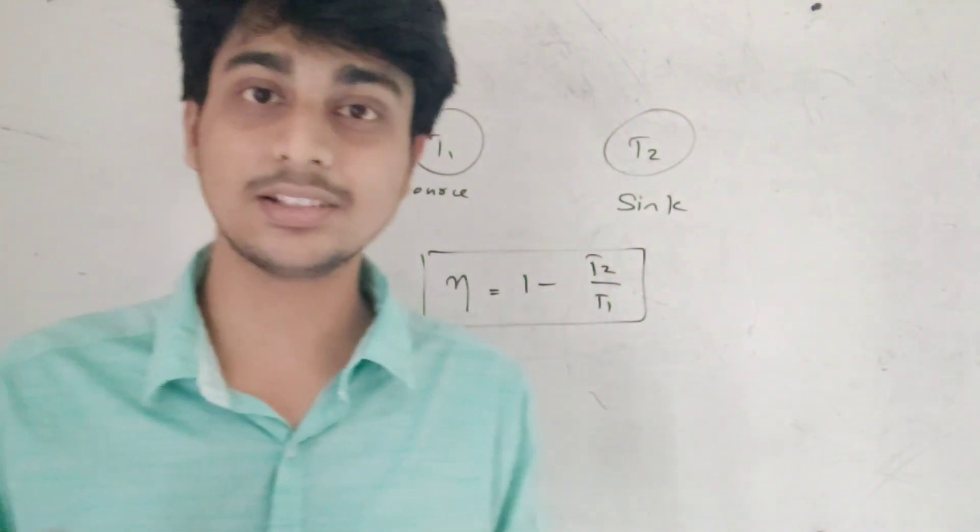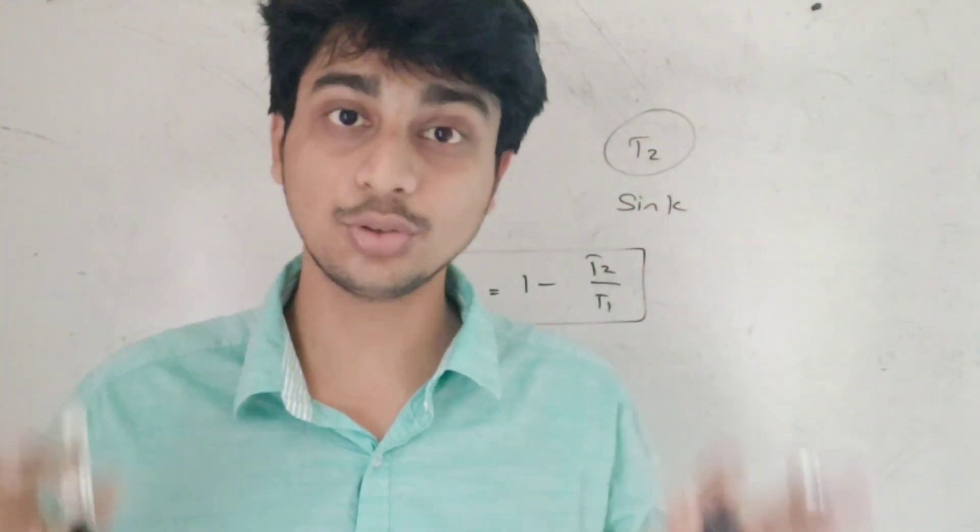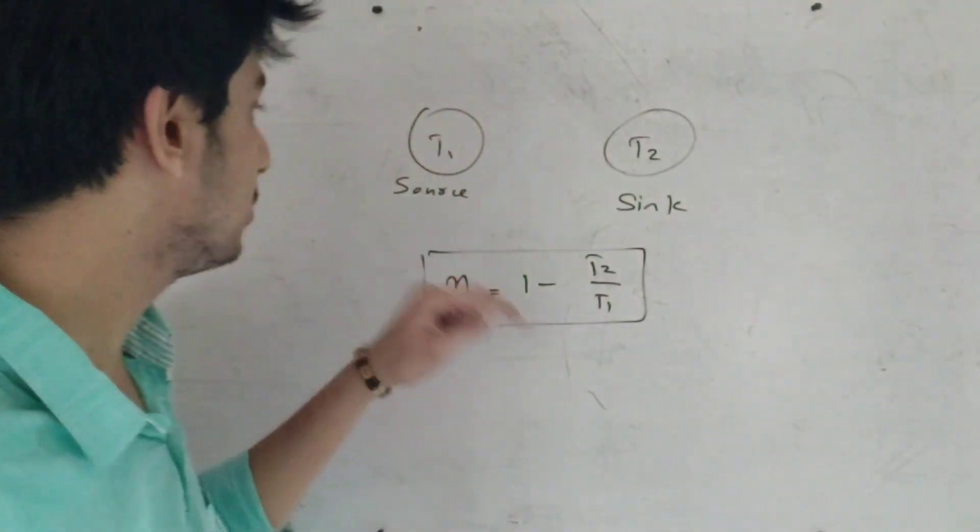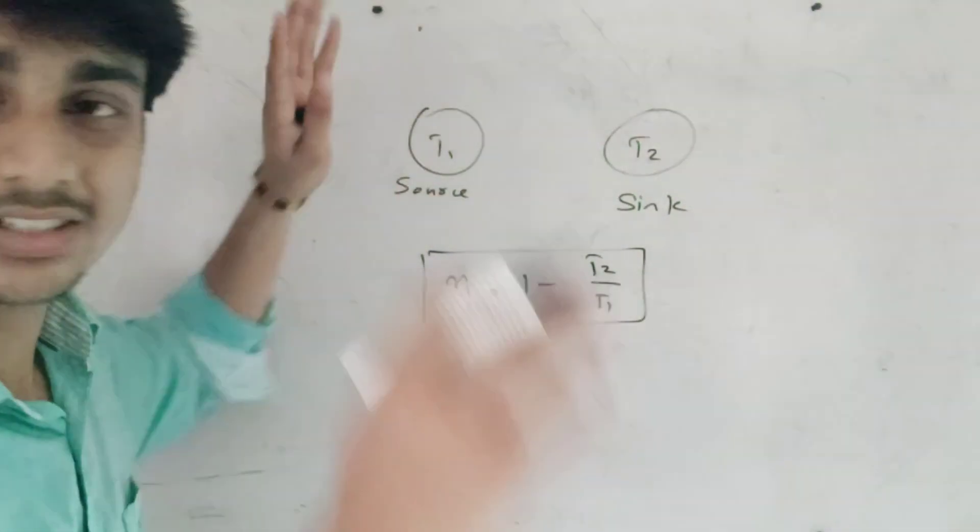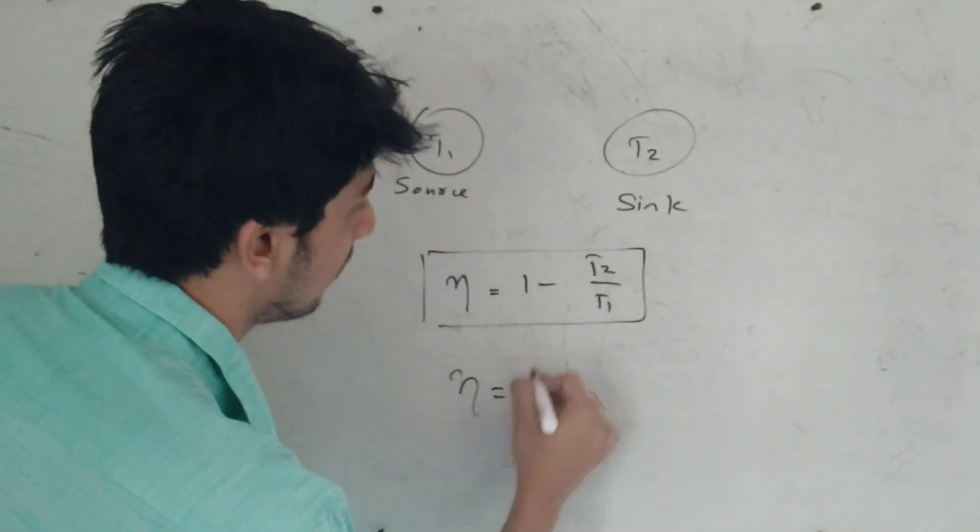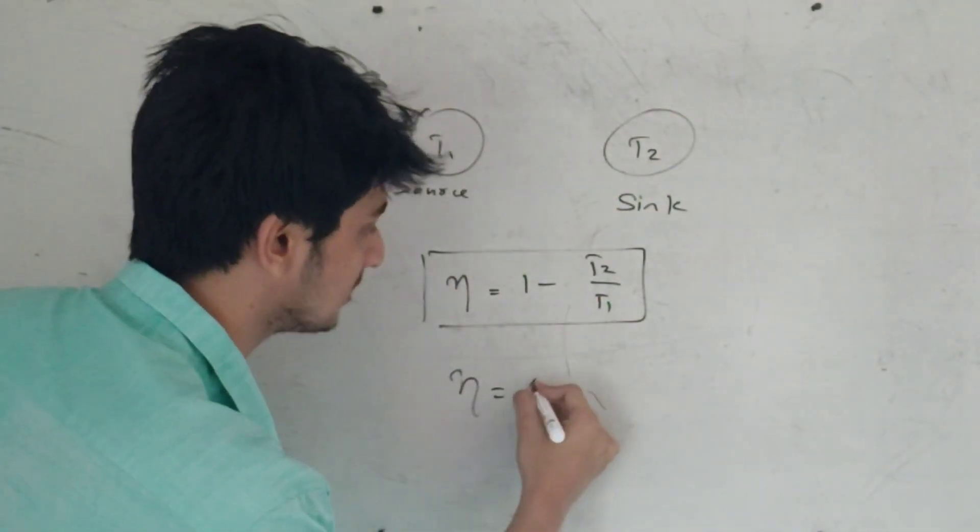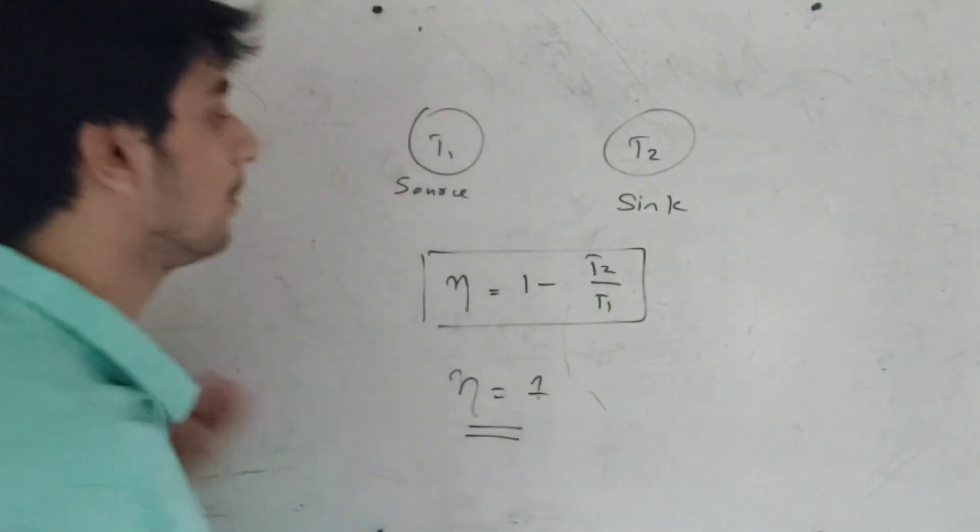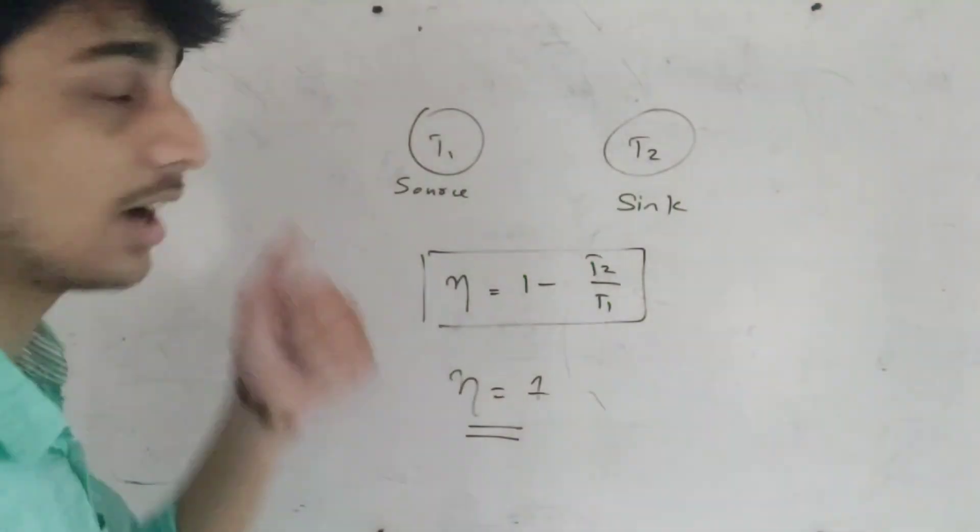Carnot engine is the most ideal heat engine. If T1 is infinite, infinite source temperature, η is 1 minus T2 by T1 becomes η equals 1, the highest efficiency for Carnot engine.